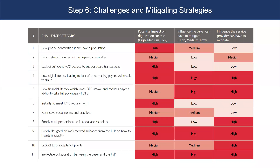Another key issue, especially with more vulnerable populations, may be a lack of identification to meet KYC requirements. Development partners often have little influence in mitigating this, but it could be addressed by selecting a digital payment product with minimal KYC requirements. Many digital payment providers, including some banks, now offer low-KYC digital wallets that can be opened remotely with just a phone number. Other issues in the toolkit — such as the risk of fraud, digital illiteracy, financial illiteracy, or low willingness to receive digital payments — can be mitigated with robust digital financial literacy training, which Shelley will discuss next.